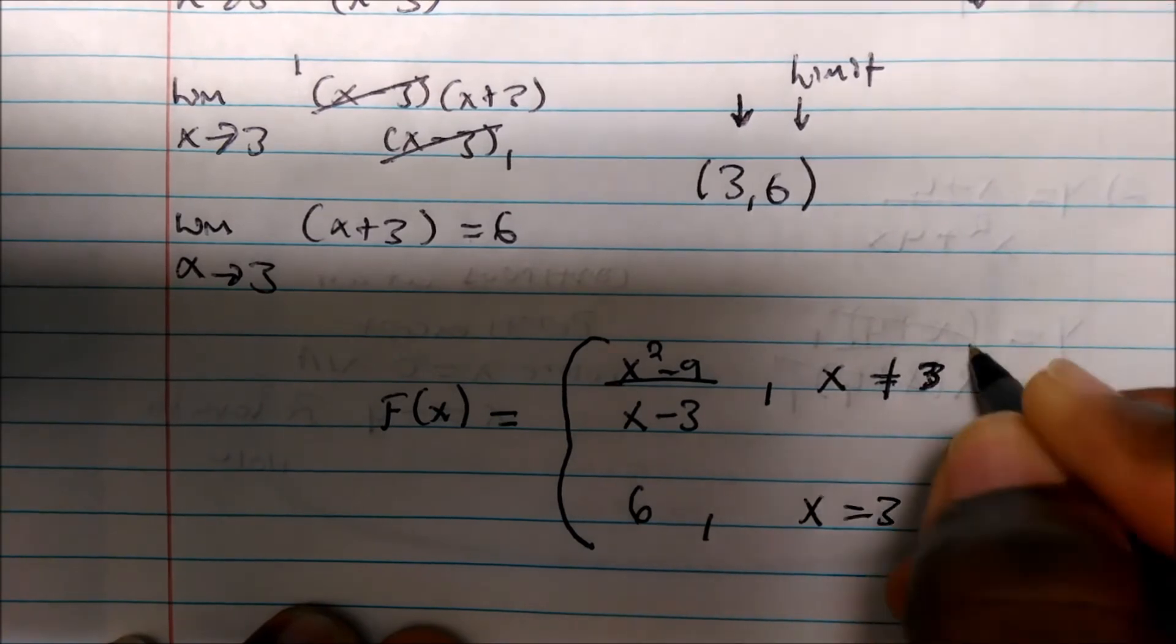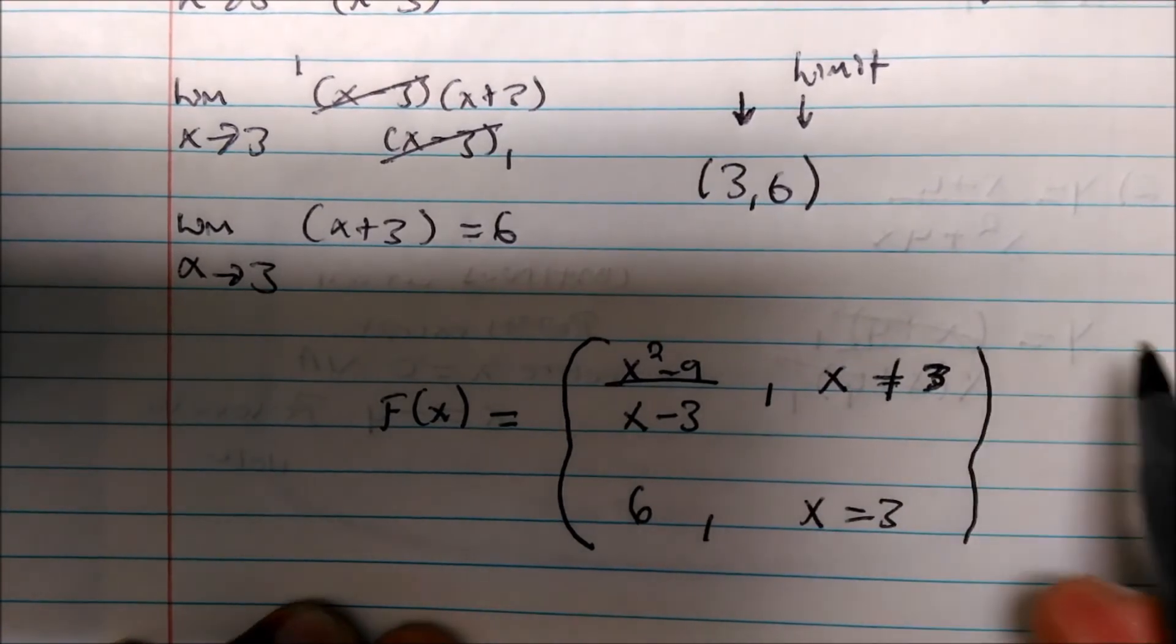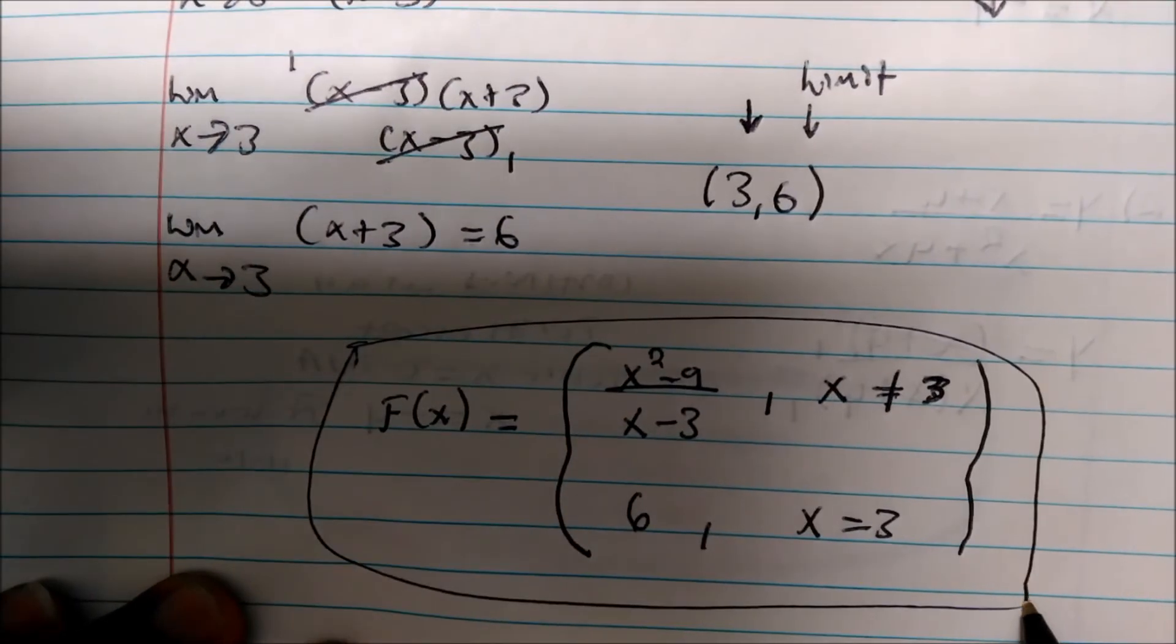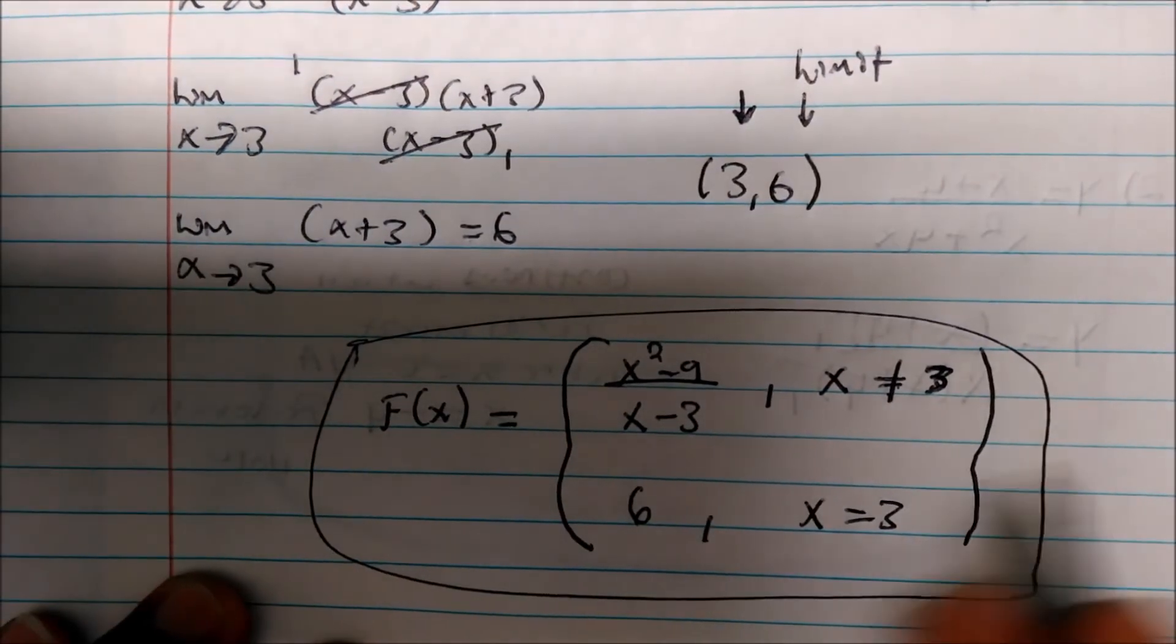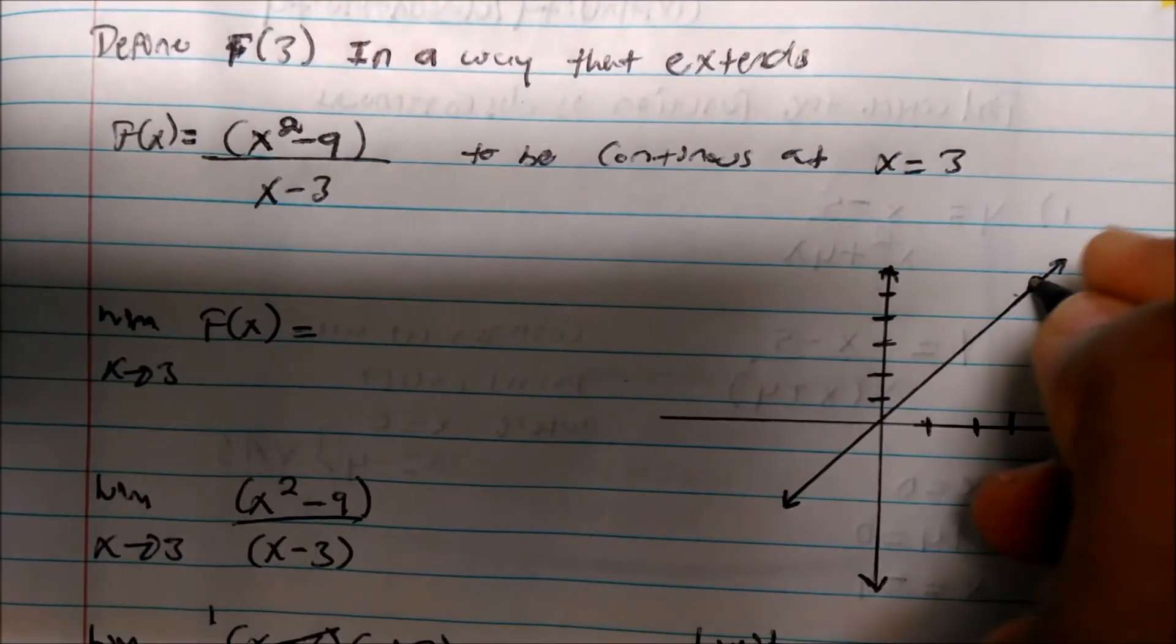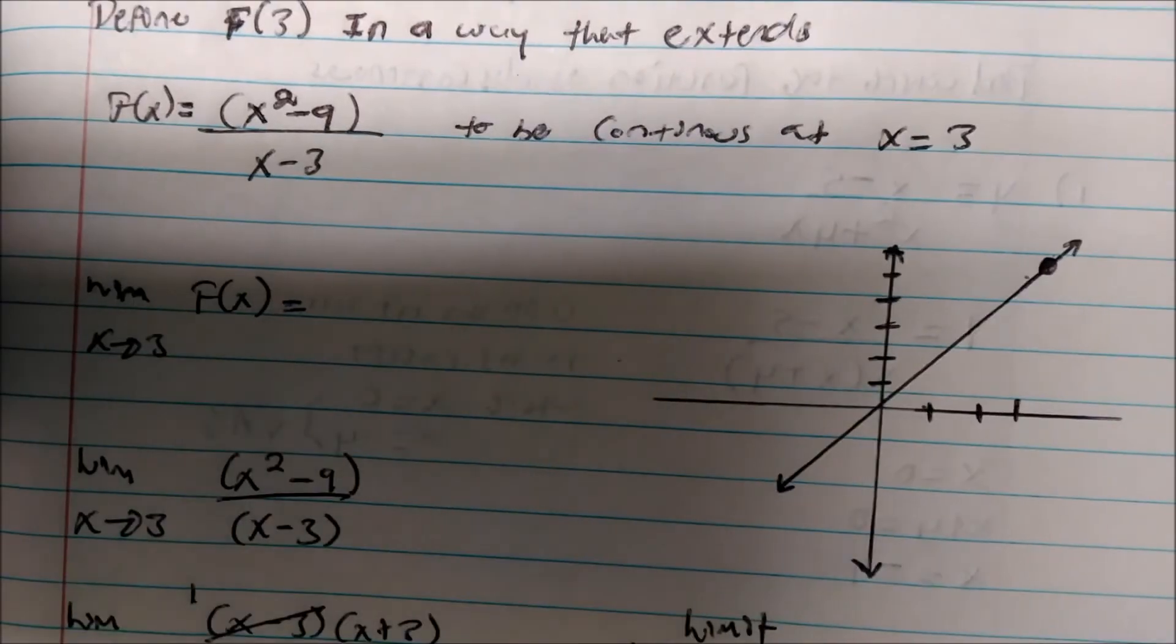And maybe I shouldn't draw the bracket here, but this is basically how we define how that function would be continuous. In here now, we just fill in this blank, right? Because think about it, what is this telling you basically?